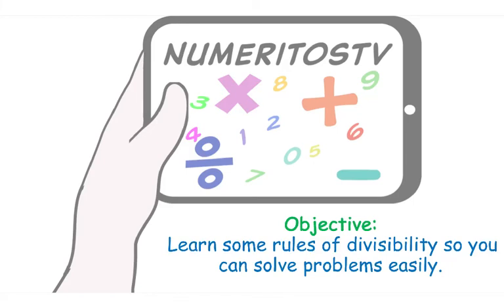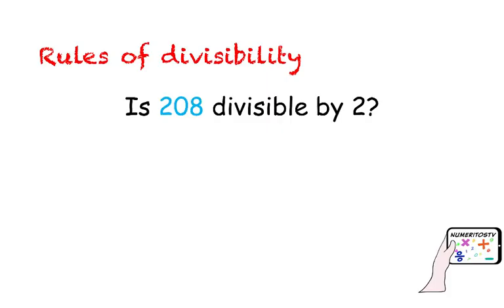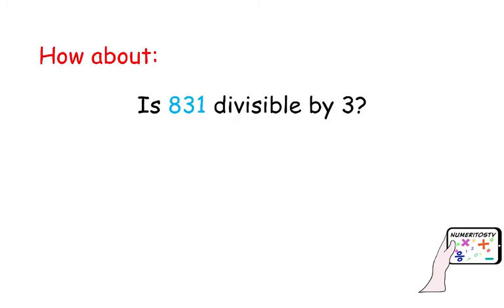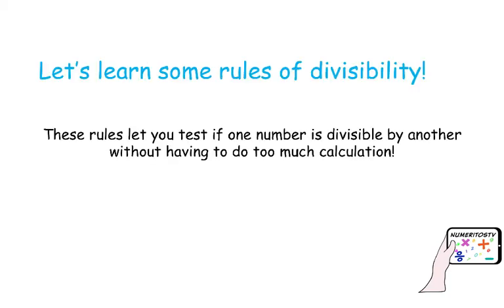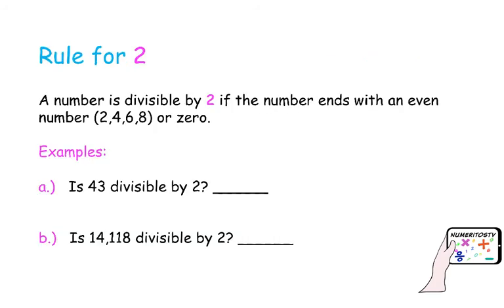The objective today is to learn some rules of divisibility so you can solve problems easily. How do we know if a number is divisible by another number without doing too much calculation or without using a calculator? Is 208 divisible by 2? 208 is divisible by 2 because it's an even number. But what about 831 — is it divisible by 3? Today we are going to learn some rules of divisibility that will test a number if it's divisible by another, without having to do much calculation or using a calculator.